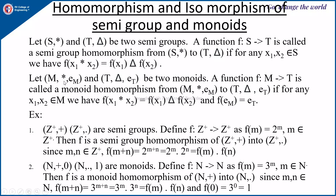Similarly, if (M, *, Em) and (T, δ, Et) are two monoids, a function F from M to T is called a monoid homomorphism if for any x1, x2 in M we have f(x1 * x2) = f(x1) δ f(x2), and additionally f(Em) = Et — that is, applying f to the identity element of M produces the identity element of T.